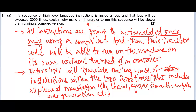One key concept here is that when you answer a question like this in an exam, you must be aware that this is not a general question. This is not asking for a general difference between a compiler and an interpreter. This question has a context — it is asking what is going to happen when a loop with several instructions is translated, and that loop will run 2000 times.